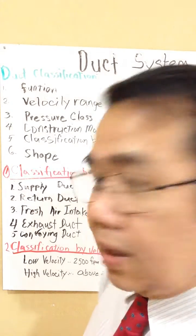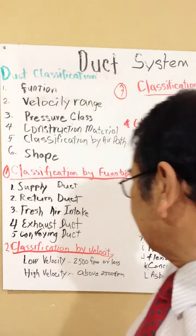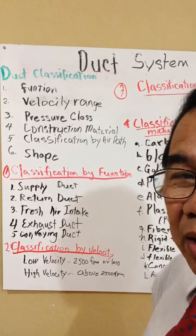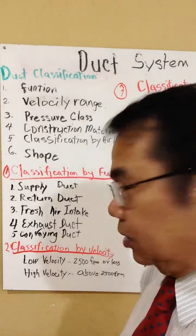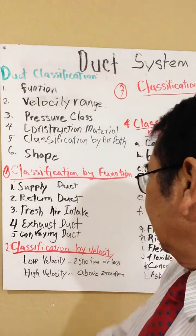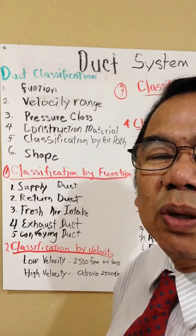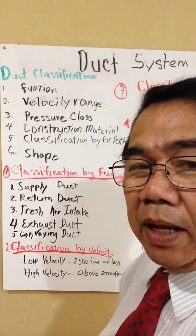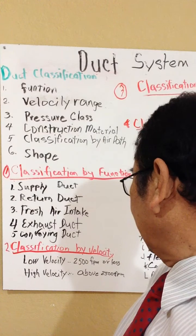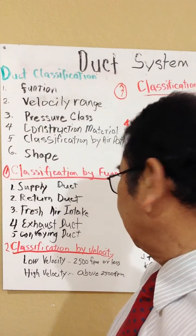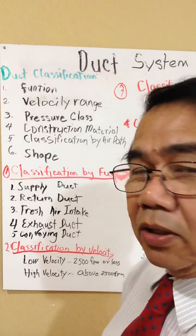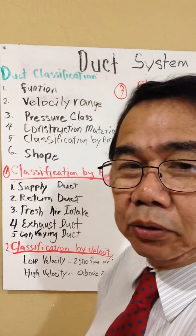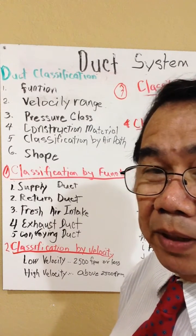The second classification we're going to discuss is classification by velocity. We can classify ducts as low velocity, meaning 2500 fpm or less, and high velocity, which is above 2500 fpm.